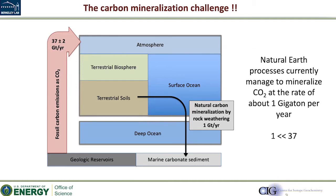The climate problem is that one gigaton is a lot smaller than 37 gigatons. The challenge for carbon mineralization is scaling it up to the point where it can make a difference. We've managed to increase emissions from one — the normal background — to 37. It might very well be possible to increase the mineralization from one to at least four or five so that it's contributing to mitigation.